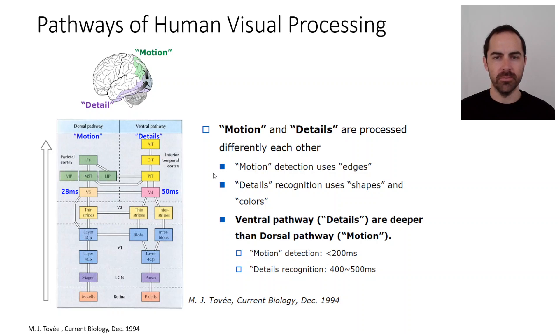There is a large body of literature on studying these pathways. Basically, the dynamic vision sensor is trying to mimic some of the processing steps in the dorsal pathway to detect motion.